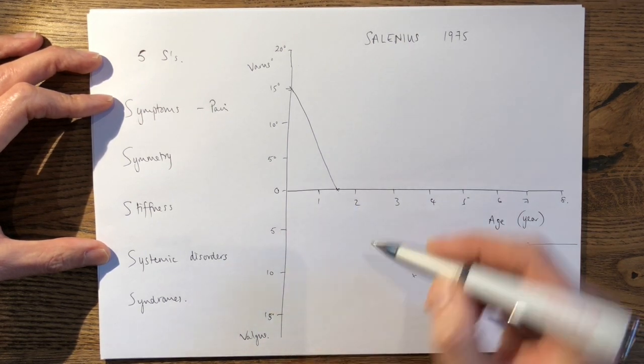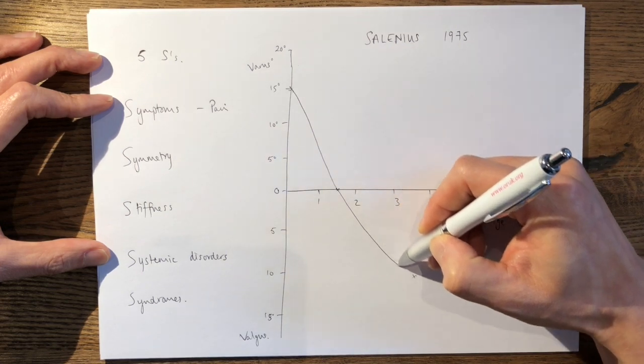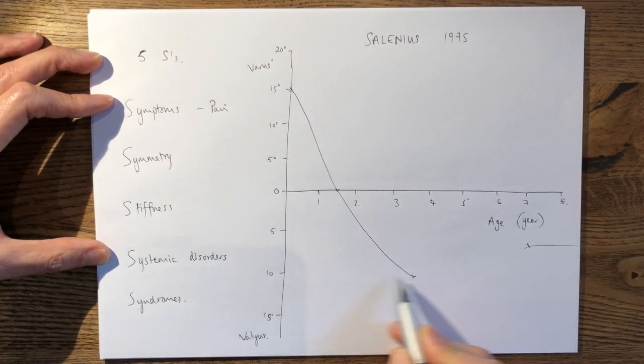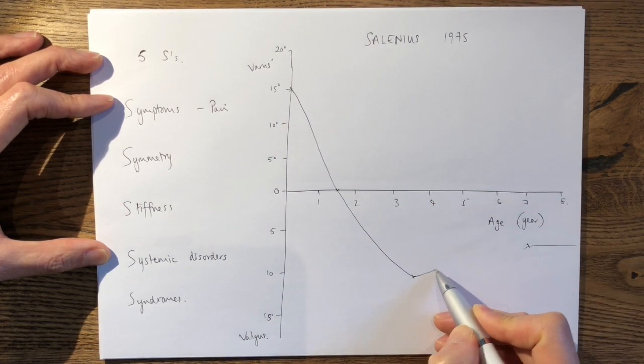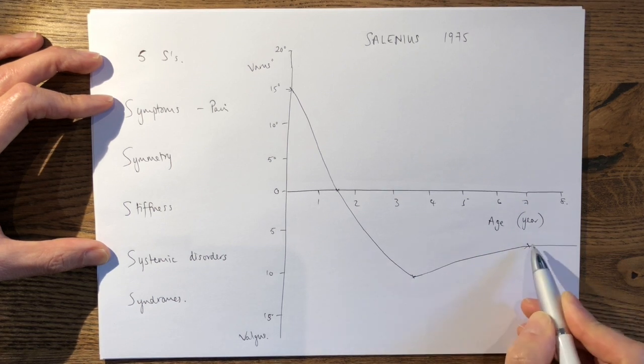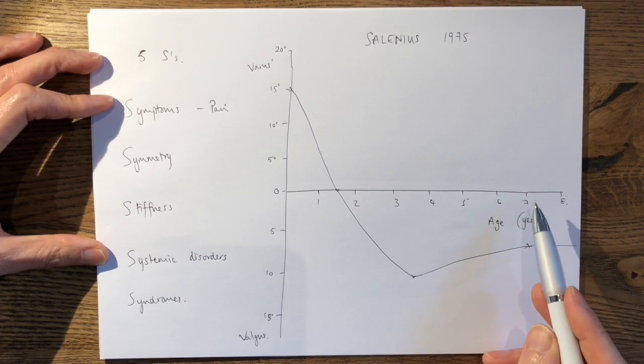So here you can just join the dots. So down here to maximal valgus angle of 10 degrees, and then gradually up there to physiological valgus at age 7.